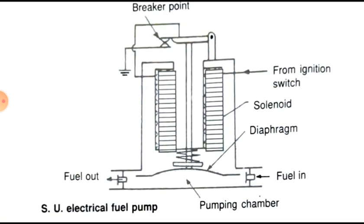When the ignition switch is on, current flows through the breaker point. The magnetic current attracts the armature and diaphragm, creating a vacuum in the pumping chamber. The inlet valve opens and fuel enters.